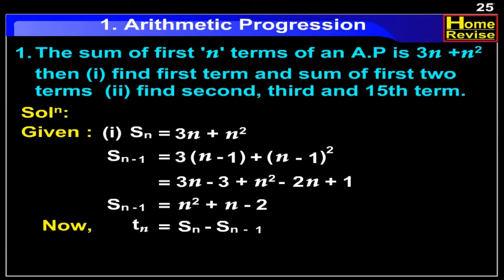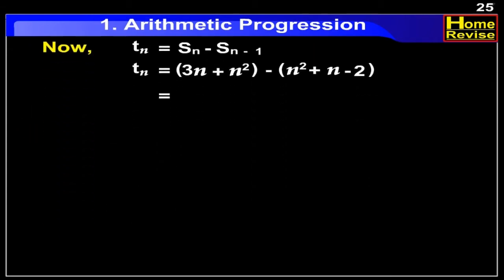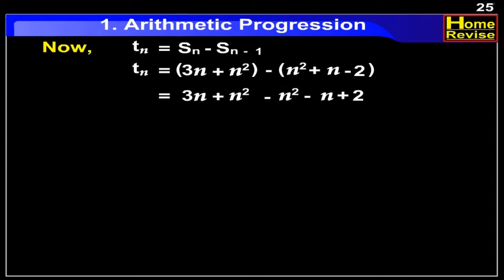Substituting the values, we get Tn is equal to (3n plus n square) minus (n square plus n minus 2). Here, plus n square and minus n square get cancelled out. Therefore, we get Tn is equal to 2n plus 2.